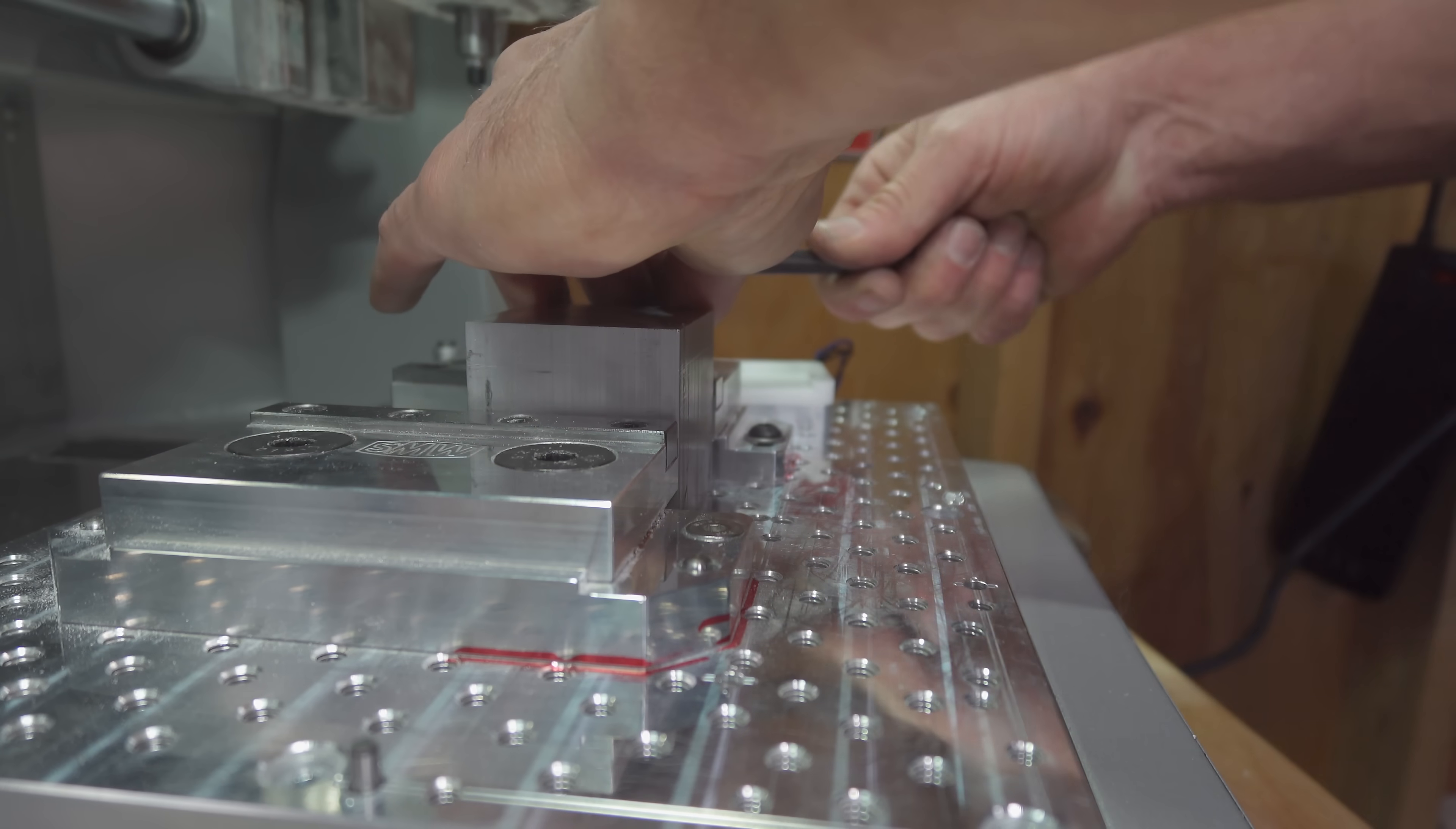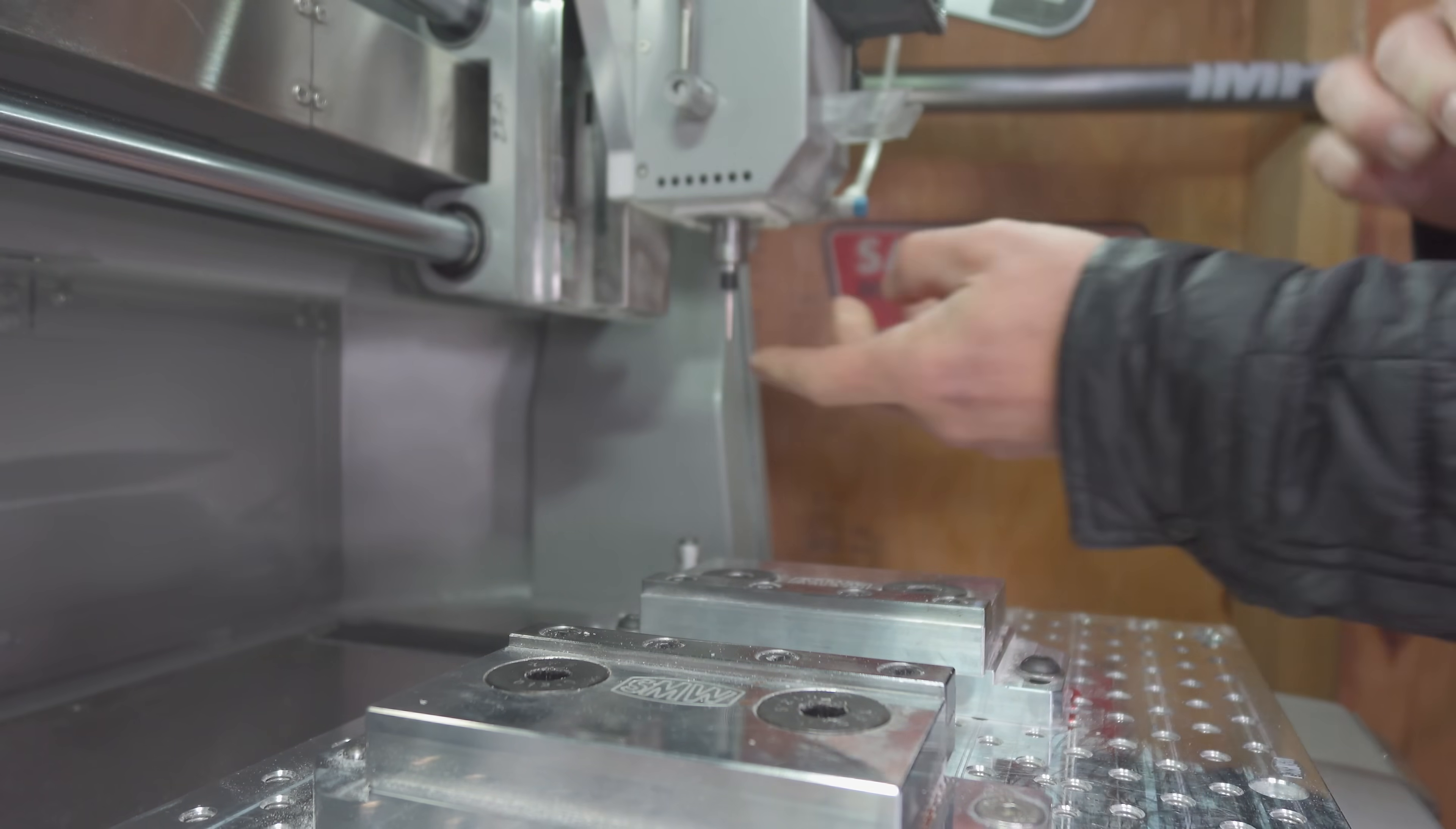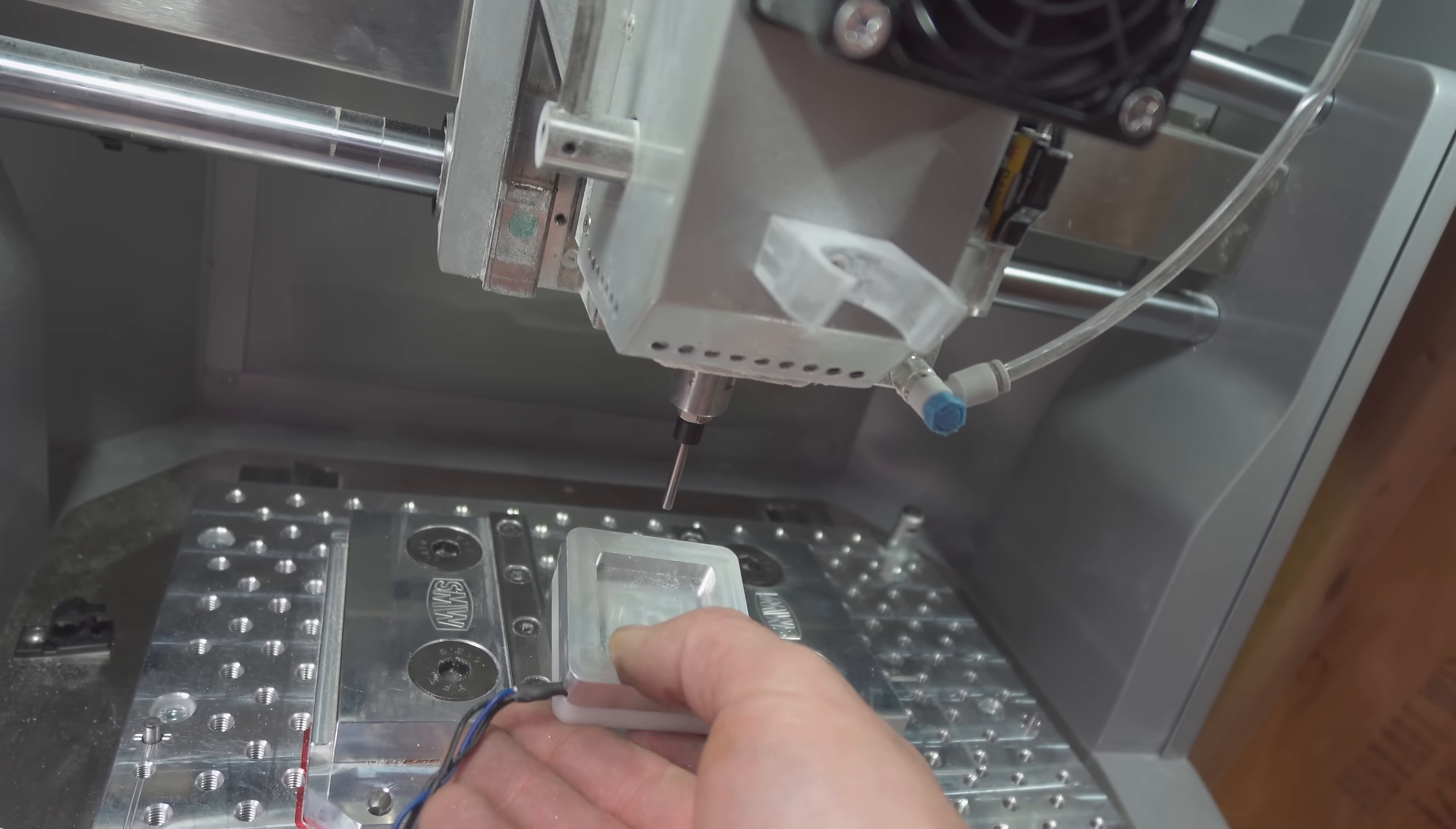Training the origin of a part is extremely easy with the wired XYZ probe. You simply position it at the corner of your stock and then run an automated procedure that will then become the zero of the workpiece.